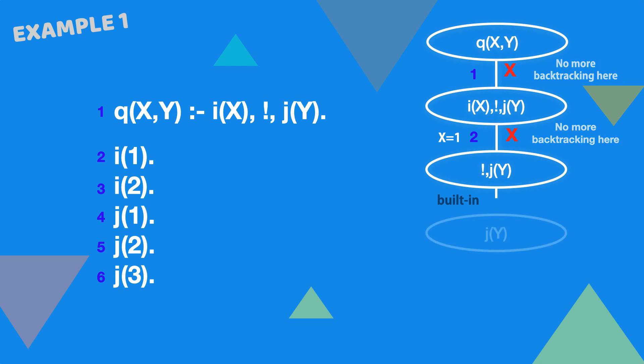This leaves the goal j y, and again Prolog searches from the top of the program. If the user refuses the three bindings for y by typing semicolons, there are no solutions left for the original goal. The cut only succeeds once and it has removed the backtracking points from the two nodes above it.